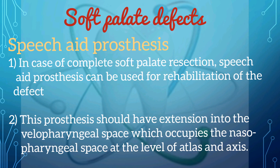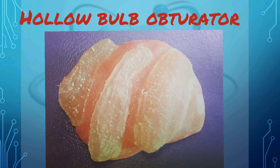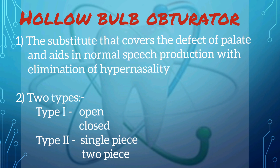Another type of prosthesis is the hollow bulb obturator. Most palatal defects cause problems in speech, mastication, deglutition and aesthetics. The palatal obturator is the only substitute that covers the defect and aids in normal speech production with elimination of hypernasality. The hollow bulb obturator can be of two types: Type 1, which includes open and closed types, and Type 2, which includes single piece and two piece.